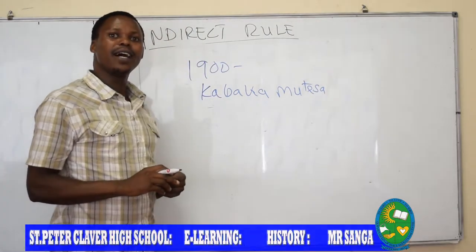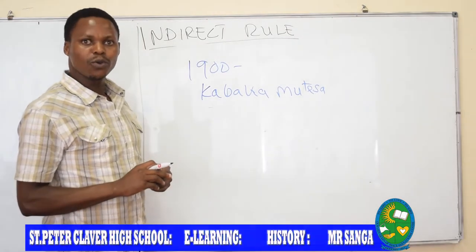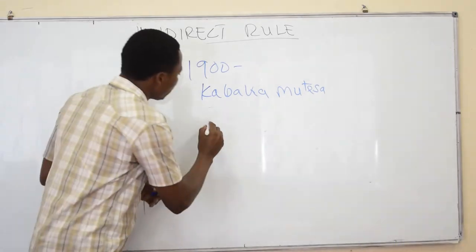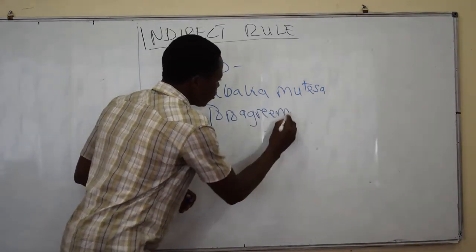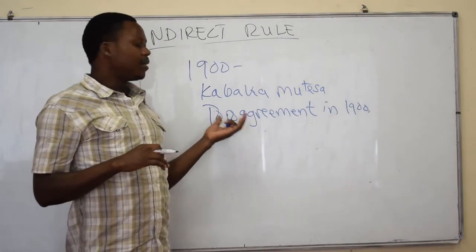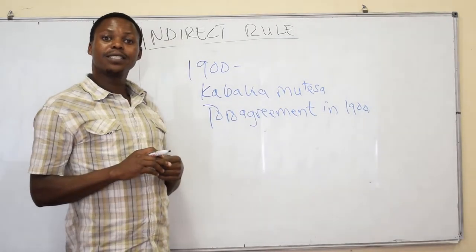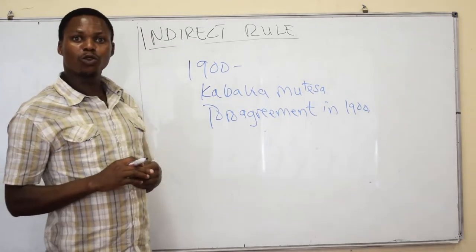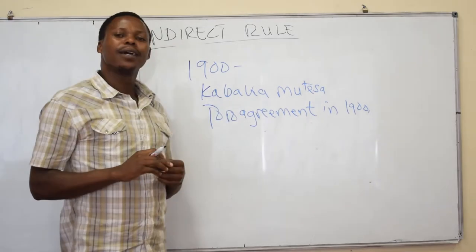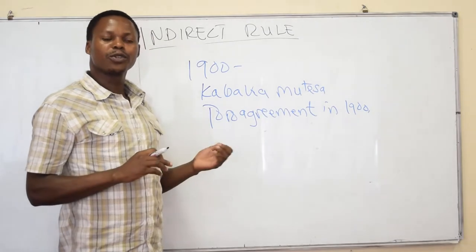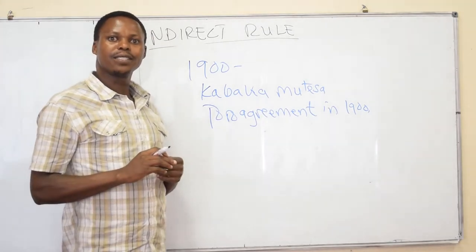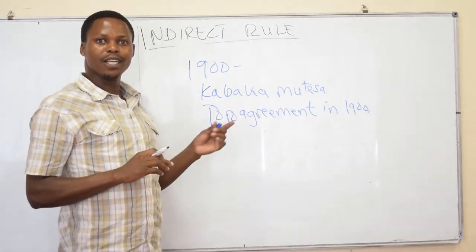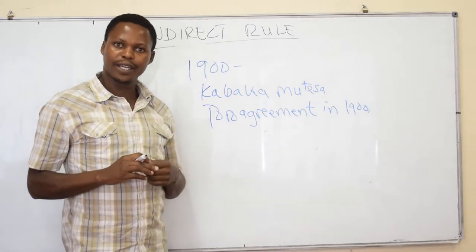Another is the same argument with the Toro, known as the Toro Agreement in the same year 1900. In the Toro Agreement, the British appointed Mukama Kasagama to be a leader of Toro. And also they signed another agreement, the Ankole Agreement, and appointed Mukama to be the leader of the Ankole society.